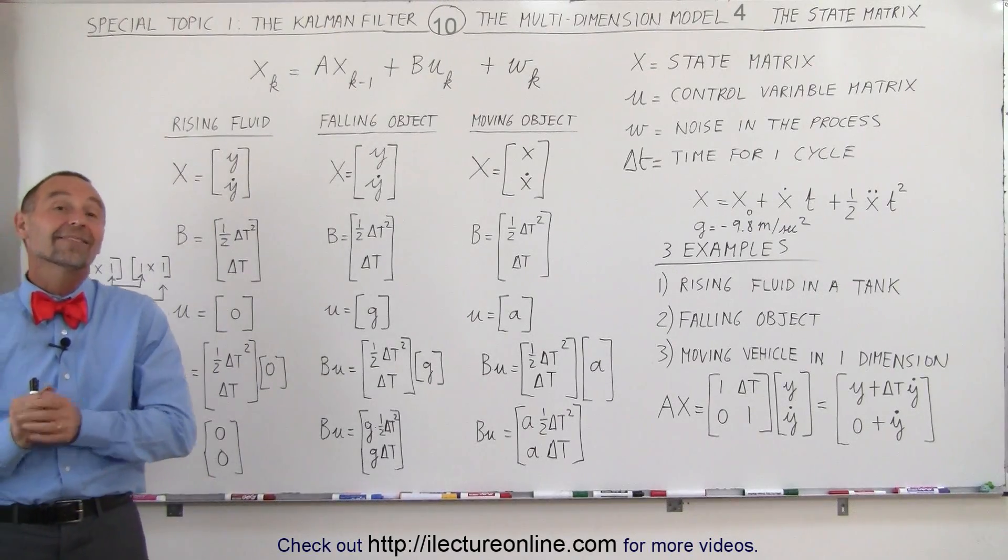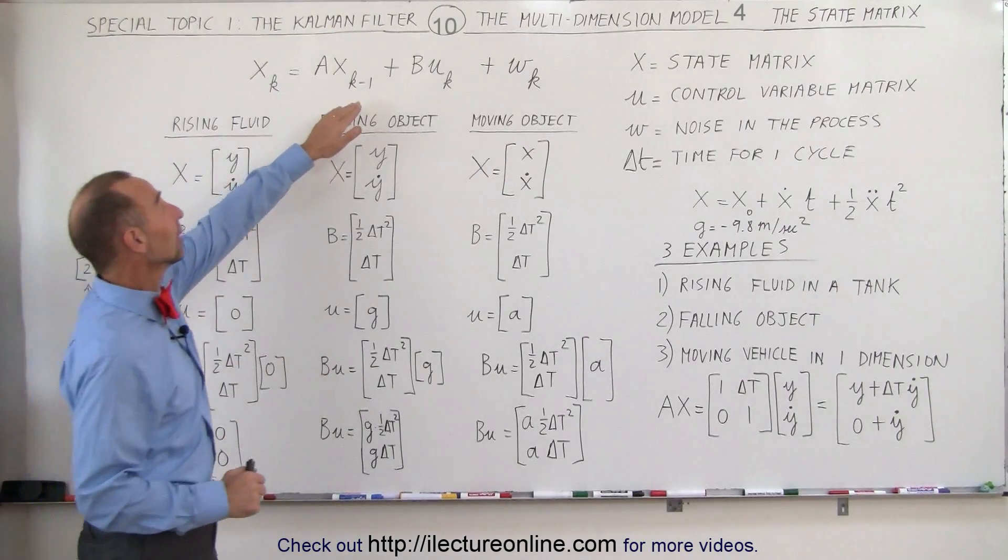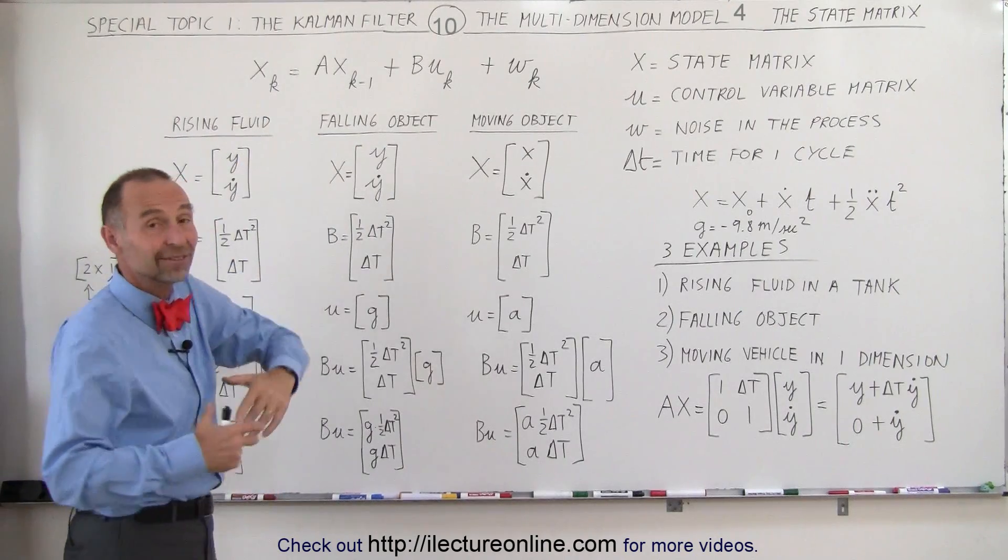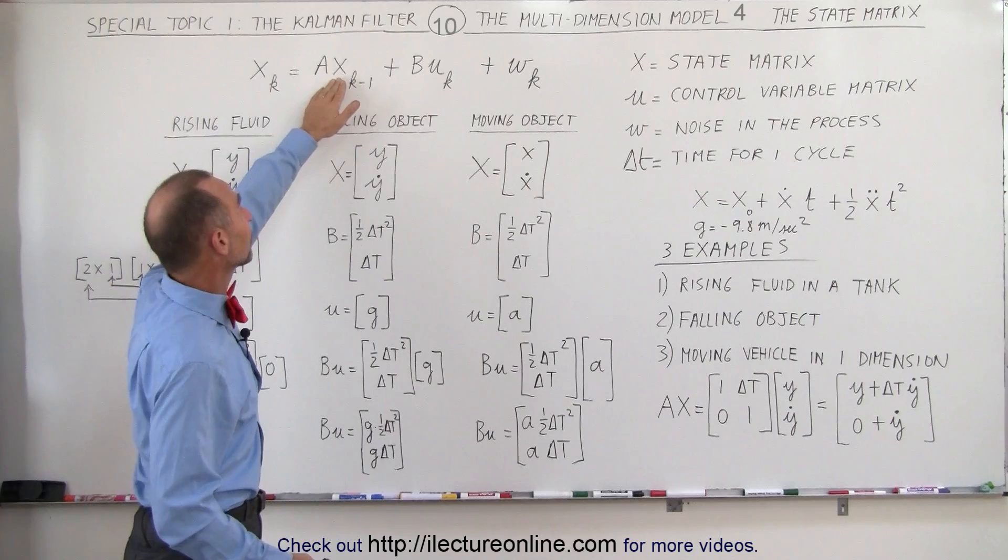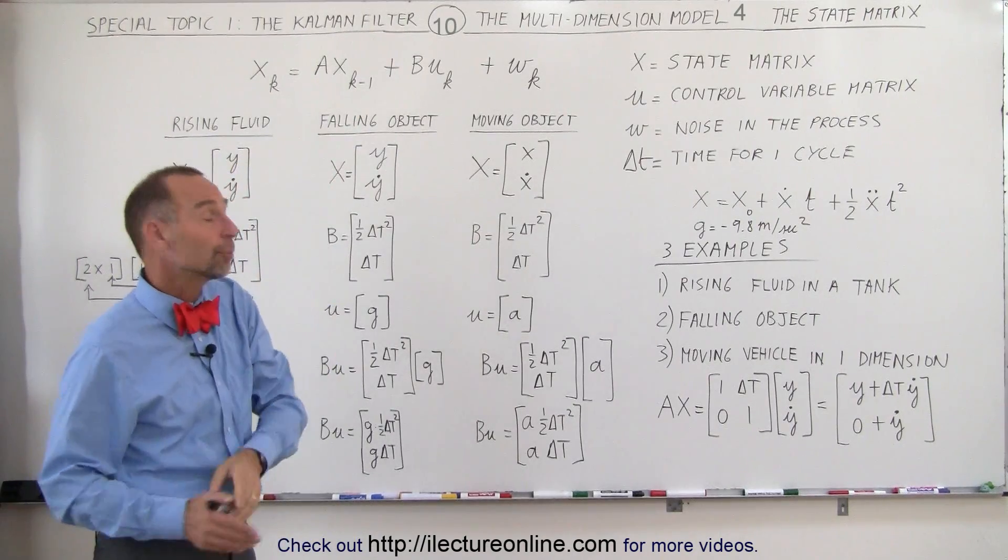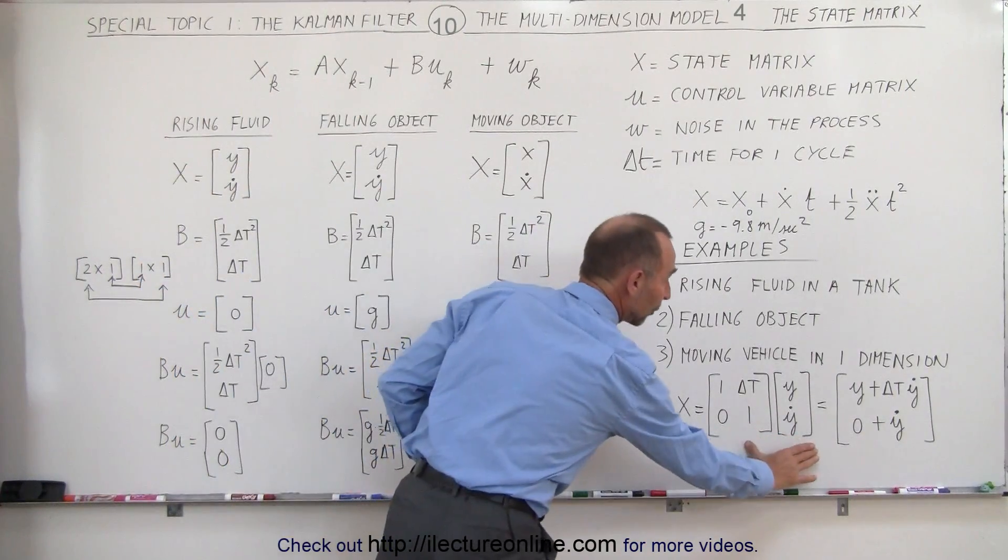Welcome to ElectronLine. Now let's take a look at the second calculation in our state matrix equation. This is an update equation. We're trying to update the current state with information from the previous state, multiply times A, and we did that in the previous video, and we have that result right here.